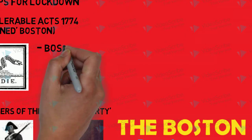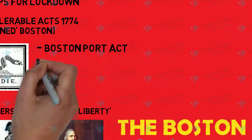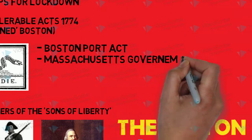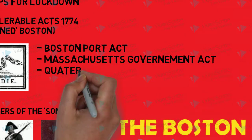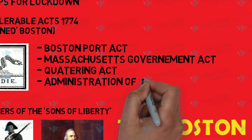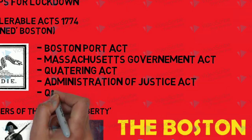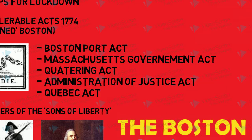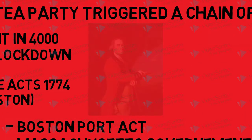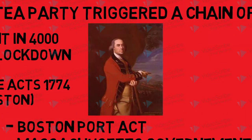The Intolerable Acts included the Boston Port Act, the Massachusetts Government Act, the Quartering Act, the Administration of Justice Act, and the Quebec Act. This essentially put Boston under a dictatorial-like rule under Thomas Gage.